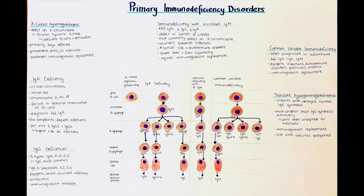Immunodeficiency disease results from failure or absence of one or more components or elements of the immune system. Primary immunodeficiency disorders is a term that refers to different diseases caused by intrinsic defects in cells of the immune system.